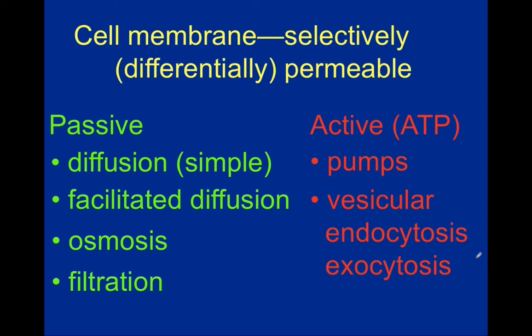Substances want to move from high concentration to low concentration — they want to move in the direction of passive transport. But in the human body, sometimes things need to move up their concentration gradient. In order to push them up and against their concentration gradients, we have to have ATP present to act as the energy source that's going to push those substances upstream. I'll explain each of these different types of transport mechanisms, but first I need to introduce a few more terms.